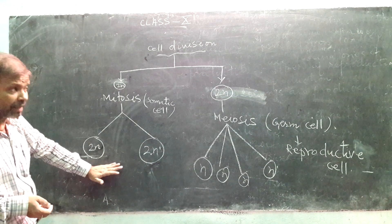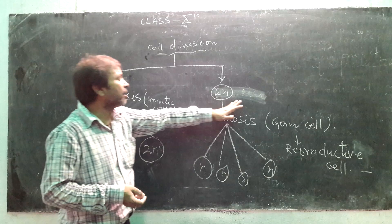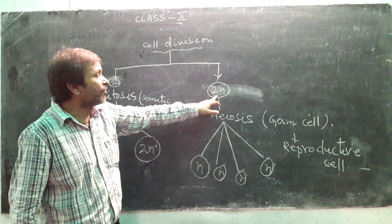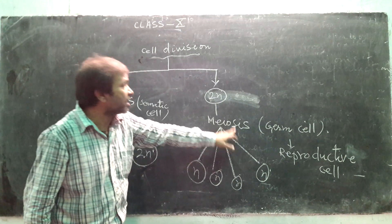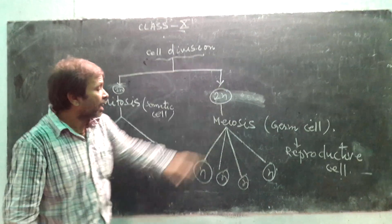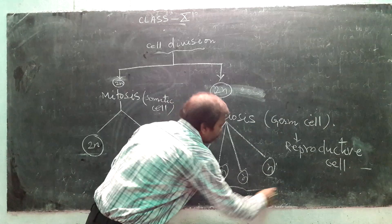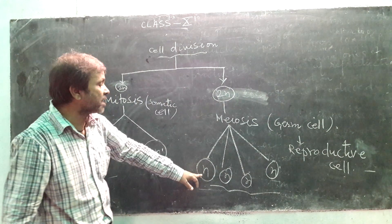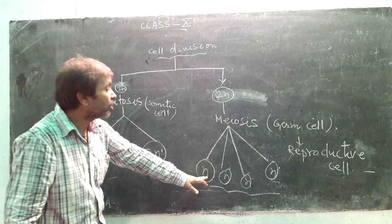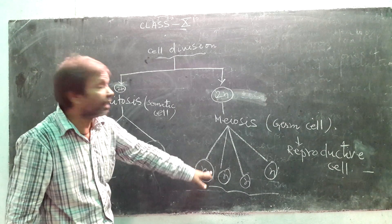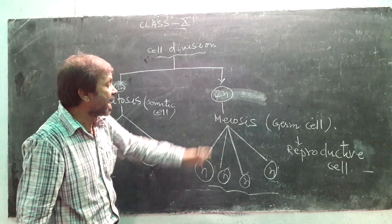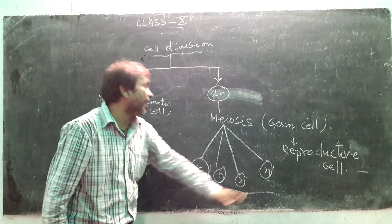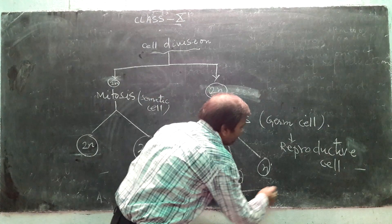Now here comes meiosis. Meiosis takes place in germ cells. After a single division of meiosis, a cell produces four new haploid cells. Haploid cells means the number of chromosomes has been reduced to half. When we make four new cells, they become four new haploid cells.